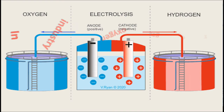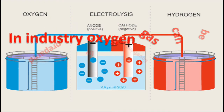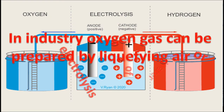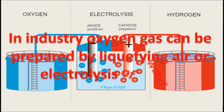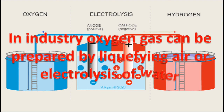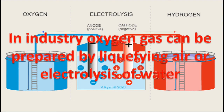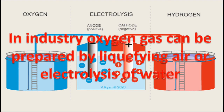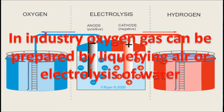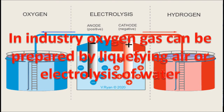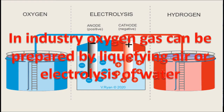On a large scale, in industry, oxygen gas can be prepared by liquefying air or by electrolysis of water. When electricity passes through acidified water, it produces hydrogen and oxygen gas.